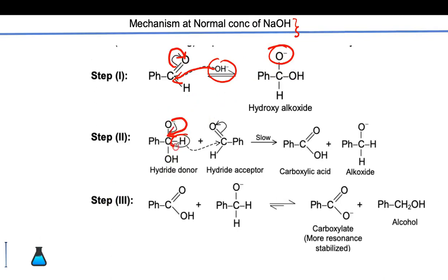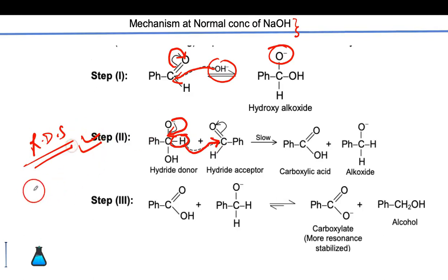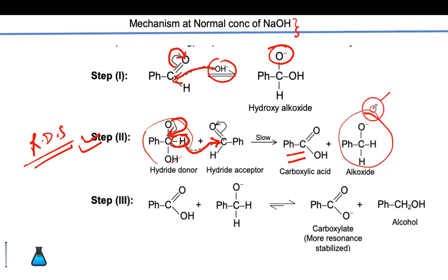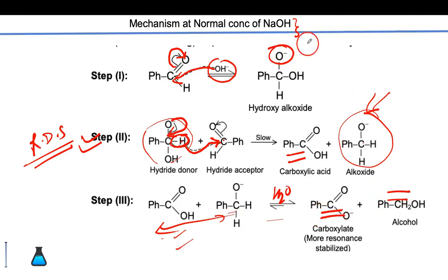In the second step, the +R effect of O minus removes H minus, and this H minus attacks the second carbonyl carbon. This is the slowest step and the rate-determining step, which helps determine the overall order of the reaction. This H minus transfer converts one molecule to carboxylic acid, and since H minus is accepted by the other carbon, it is converted to alcohol. The resulting alkoxide accepts H+ from water, or intermolecular proton exchange can also take place, giving carboxylic acid and alcohol as products.